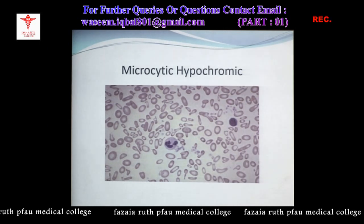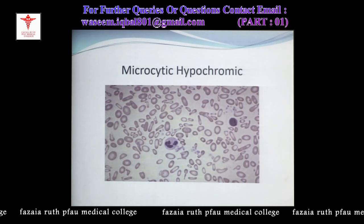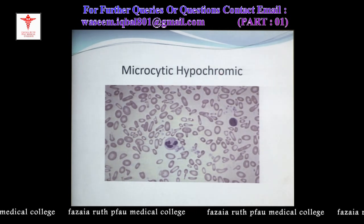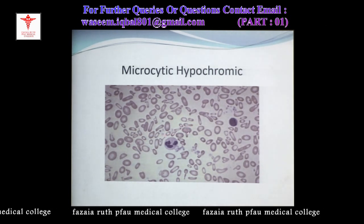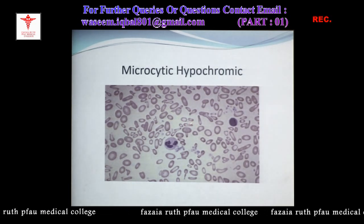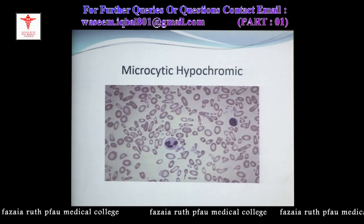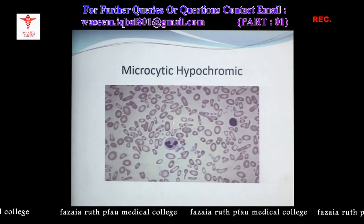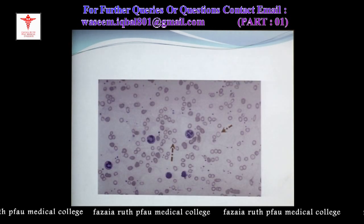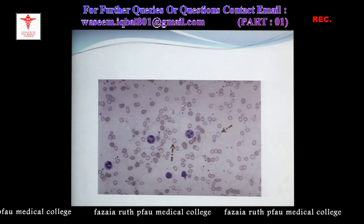This slide shows severe iron deficiency with poikilocytosis — variation in shape — including teardrop cells, misshapen cells, and a target cell. Anisocytosis refers to variation in size, where you have small cells alongside normal cells. Here you can also see small cells with a hypochromic appearance.